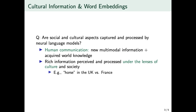Human communication happens in very multimodal scenarios and humans are very good at using and combining this information with all the core knowledge they have already acquired over time. This very rich information is somehow perceived and processed under the lens of culture and society. One classical example of this effect of culture on communication is the classical example of 'horse' in the UK versus France.